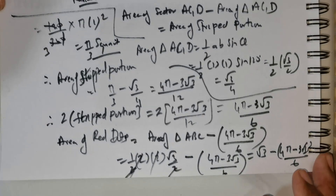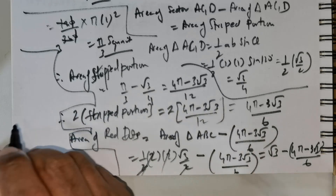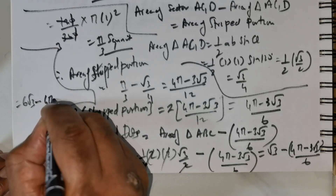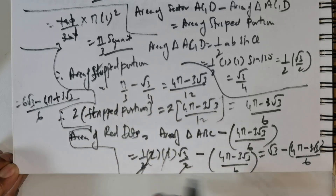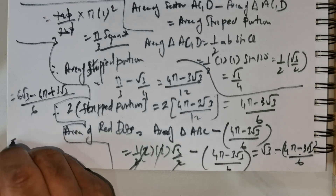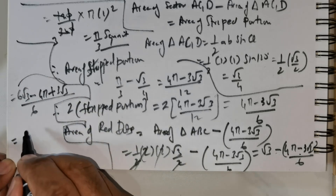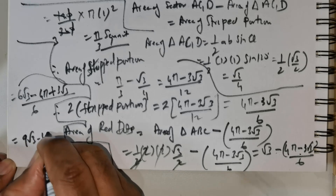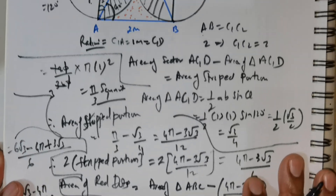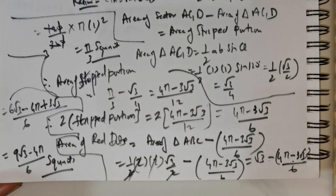Now I need to do some simplification. Taking 6 as the LCM, this becomes 6 root 3 minus 4 pi plus 3 root 3, all divided by 6. Distributing the negative sign: negative 4 pi plus 3 root 3. Adding 6 root 3 and 3 root 3 gives 9 root 3, so the final answer is 9 root 3 minus 4 pi, divided by 6 square units. This is the area of the dotted portion. This is a lovely twisted question and this is a good place for us to stop. Thank you everybody.